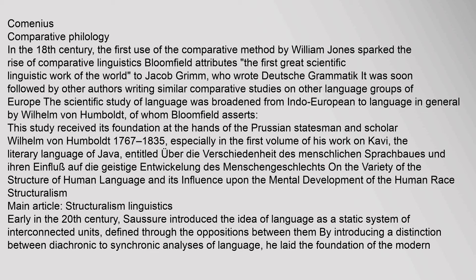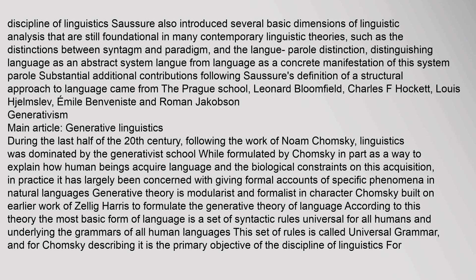Early in the twentieth century, Saussure introduced the idea of language as a static system of interconnected units defined through the oppositions between them. By introducing a distinction between diachronic and synchronic analyses of language, he laid the foundation of the modern discipline of linguistics. Saussure also introduced several basic dimensions of linguistic analysis still foundational in many contemporary linguistic theories, such as the distinctions between syntagm and paradigm, and the langue-parole distinction — language as an abstract system versus as a concrete manifestation. Substantial additional contributions came from the Prague School, Leonard Bloomfield, Charles F. Hockett, Louis Hjelmslev, Émile Benveniste, and Roman Jakobson.